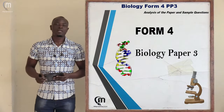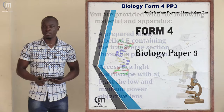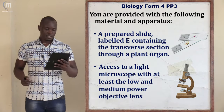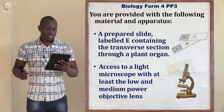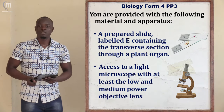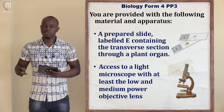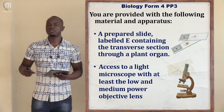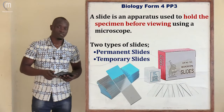Hello there and welcome. I want us to look at a KCSE 2023 Biology paper and let's begin from the first question. The first question is asking: you are provided with the following materials and apparatus. The first thing is a prepared slide labeled E containing a transverse section through a plant organ. The first part of this statement is telling us that we have been given a slide, so let's remind ourselves the types of slides we studied in Form 1.